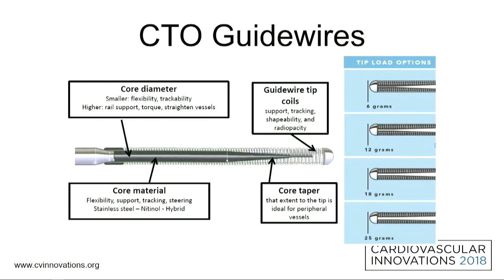I could give an hour lecture on the engineering of guide wires — it's such a complex and important process. Just to give a very short description: it's all about the core diameter and core material. The vast majority are made of stainless steel; the core diameter is usually 0.035, 0.018, or 0.014 inch. The tip is very important — in engineering terms, this is about the relationship between the grind and the taper. The coils coat the outer lining of the tip and can either be bare coils or coated in a polymer jacket, which gives lubricity and tactile feedback.